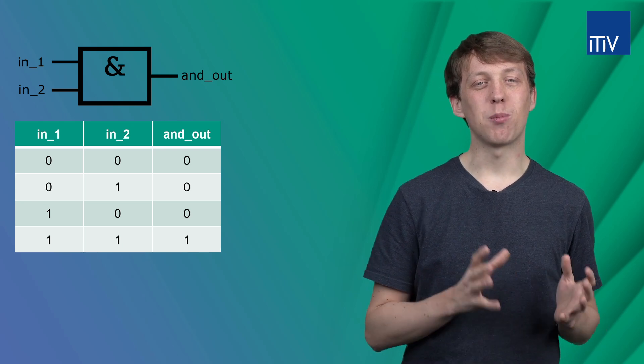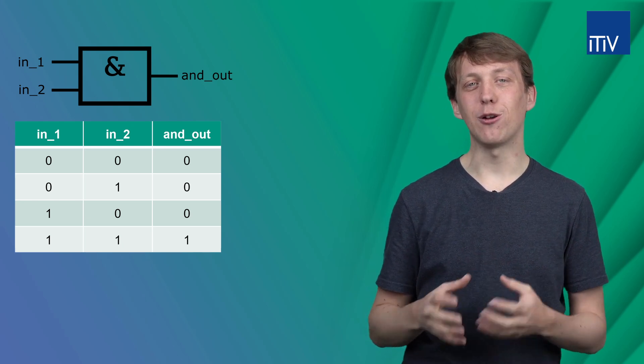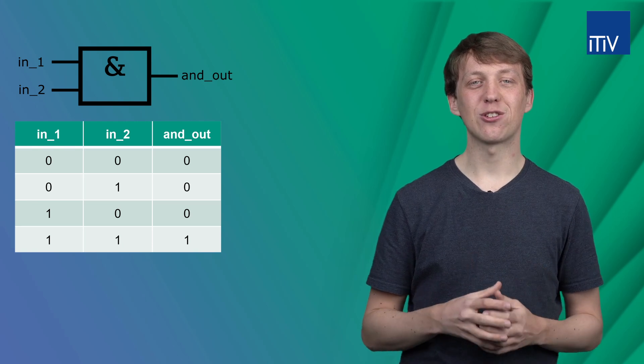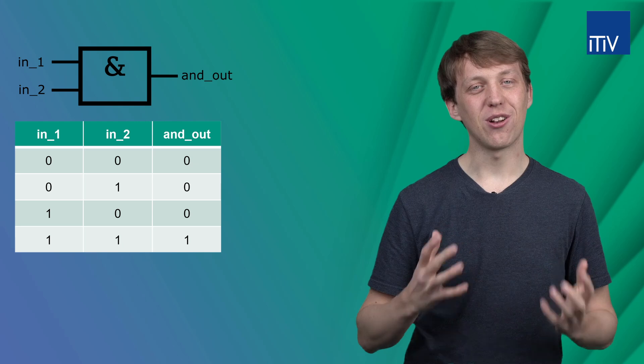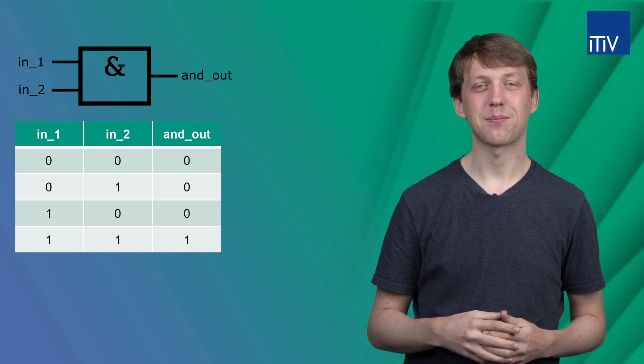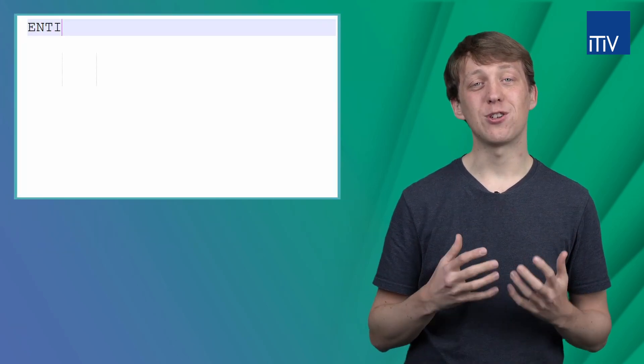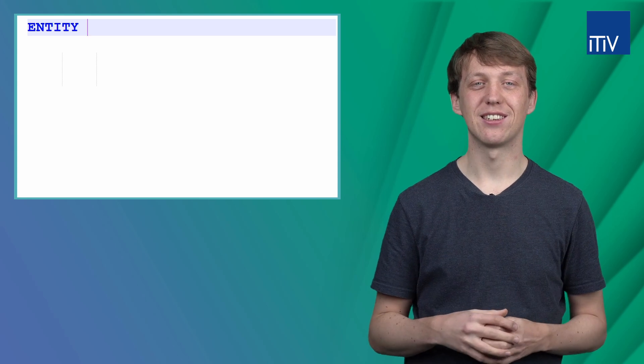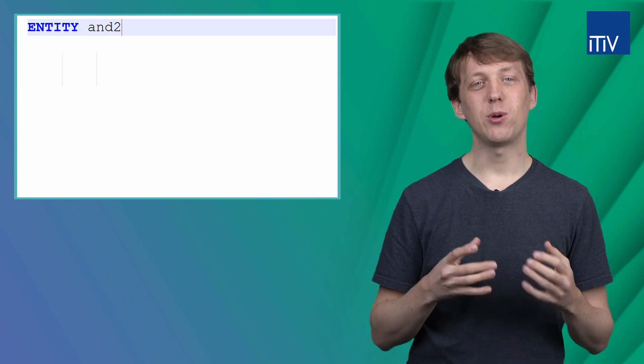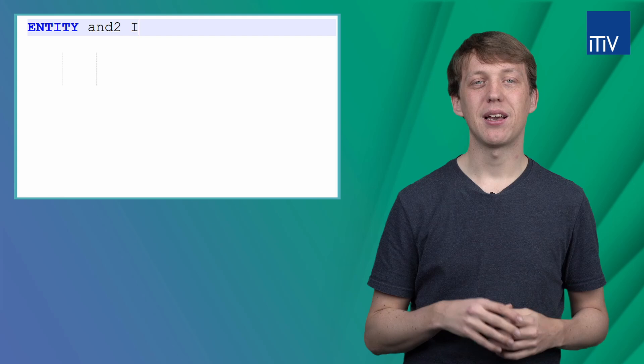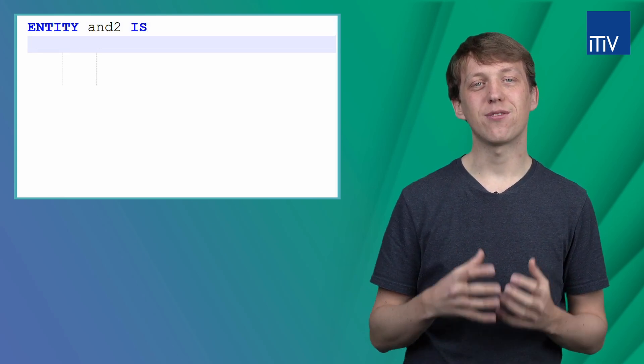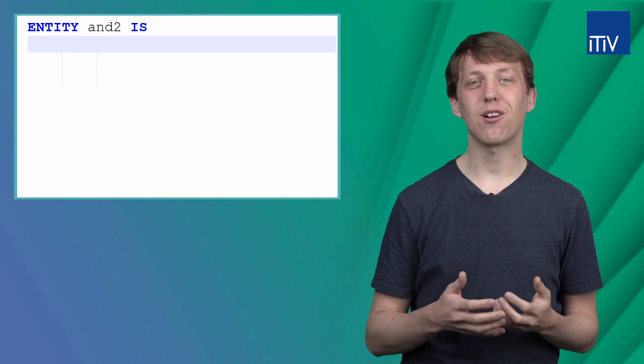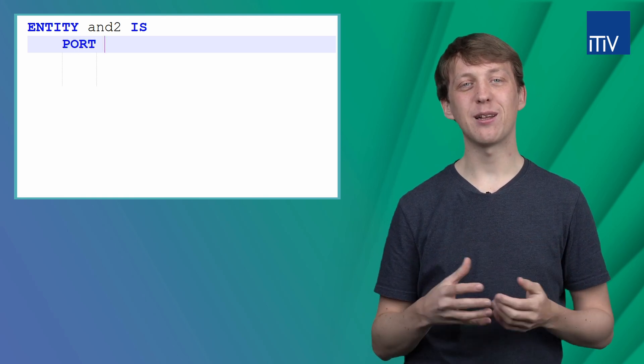You can define ports for input and output signals and also parameter values called generics. So let's start designing. We first have to use the keyword entity. Afterwards we declare the design name and add the keyword IS. Now we can define the signals for our model using port and parenthesis.